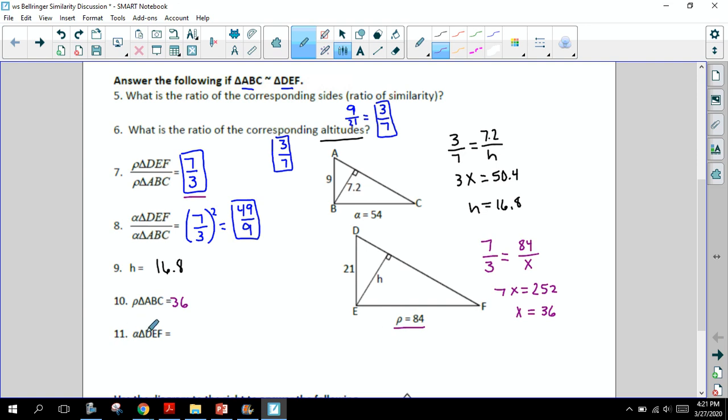Finally, number 11 here, it's asking for the area of DEF. Well, DEF is the large triangle. And by finding the area, we're going to use the ratio of the areas. So I'm going to start with this 49 over 9. And that's equal to, well, the area of the large triangle, I don't know. That's what it's asking for. So the area of the large on top is my X or unknown. The area of the small one, well, we know that here is 54.